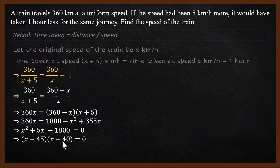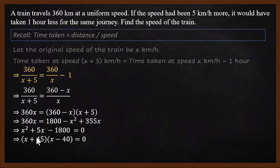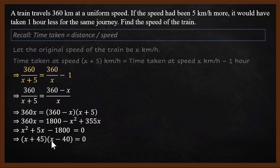Now we find the roots. Either x+45 = 0, giving x = −45, or x−40 = 0, giving x = 40. But x represents speed. Can speed be negative? No — that would mean going backwards. So we reject x = −45. Therefore x = 40, which is a positive speed, and that is the answer.